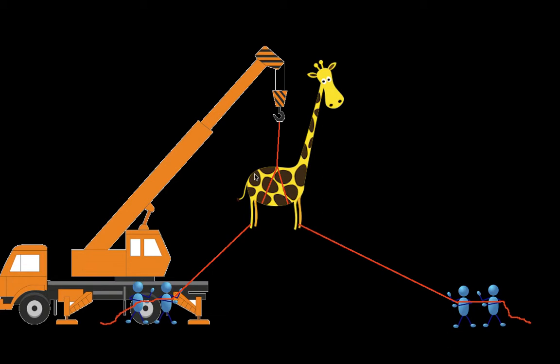Cables and ropes and wires and such can only exert force in the direction that they're attached. So for example this cable that's holding the giraffe up can only exert a force in the upward direction. This cable can only exert a force in this direction and so on.